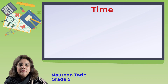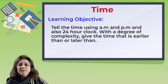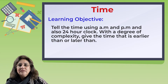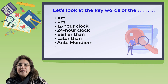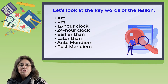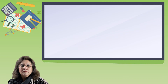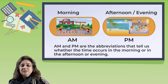Good morning students. Today you will learn about telling the time using AM and PM and also the 24-hour clock, with a degree of complexity — giving the time that is earlier than or later than. Let's look at the key words of the lesson: AM, PM, 12-hour clock, 24-hour clock, earlier than, later than, ante-meridian, post-meridian.